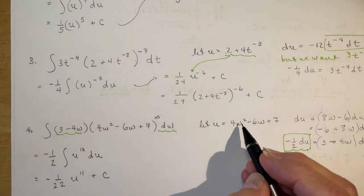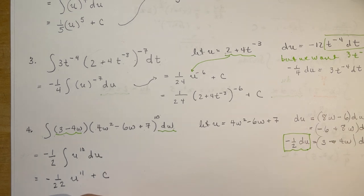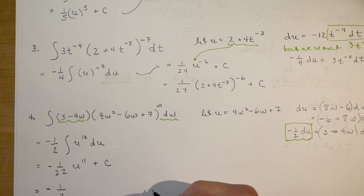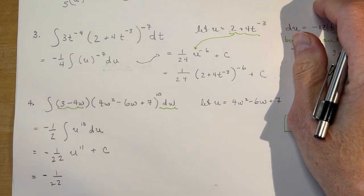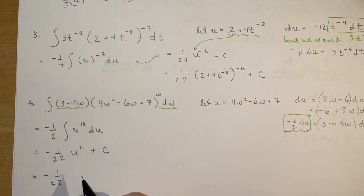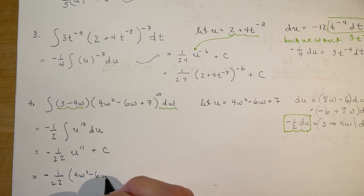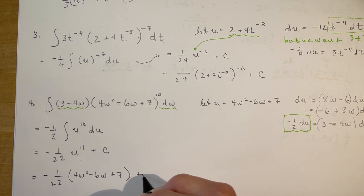Last step, plug in the u. So, minus 1 over 22. And don't forget, like I said before, you can always check all these because you are so good at taking the derivative. And there's your answer.